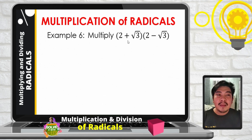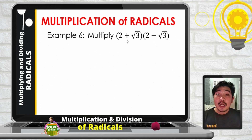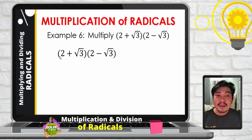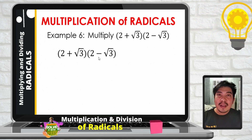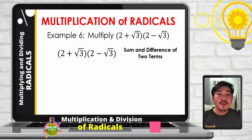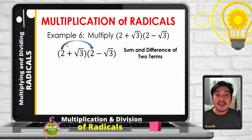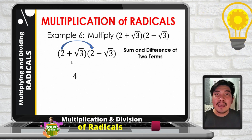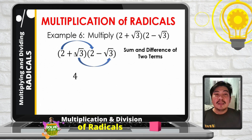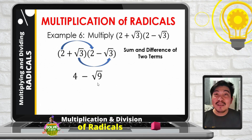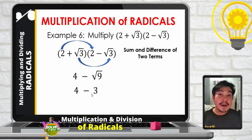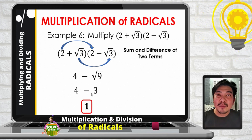Example number 6. We are multiplying a binomial by another binomial. If you can see, both expressions have 2 and square root of 3 — the only difference is the operation: one is addition and the other subtraction. We can use the special product known as the sum and difference of two terms. Multiply the first terms: 2 times 2 is 4. Then multiply the last terms: positive square root of 3 times negative square root of 3 gives negative square root of 9, which is negative 3. So we have 4 minus 3, which is 1. The final answer is 1.